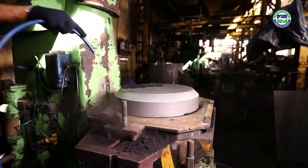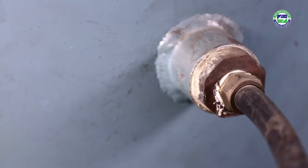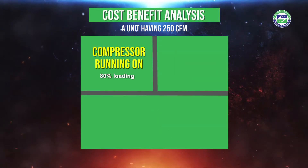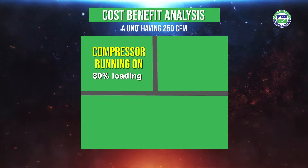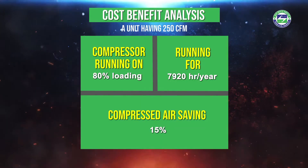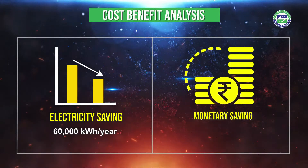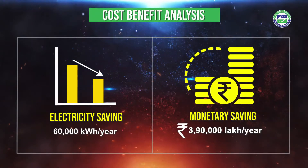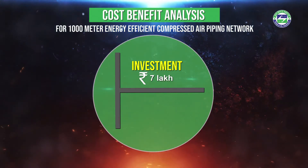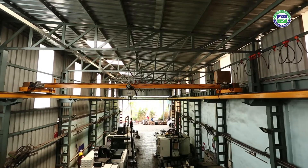To understand the cost-benefit analysis of an energy efficient compressed air piping network, consider a unit with a 250 cubic feet per minute compressor running at 80% loading for 7,920 hours annually. Considering a 15% saving in compressed air, the unit can achieve savings of around 60,000 units of electricity annually, leading to a monetary benefit of around 3,90,000 rupees. The investment required for the energy efficient piping network — considering a 1,000-meter line — is around 7,00,000 rupees, which can be recovered within 2 years.